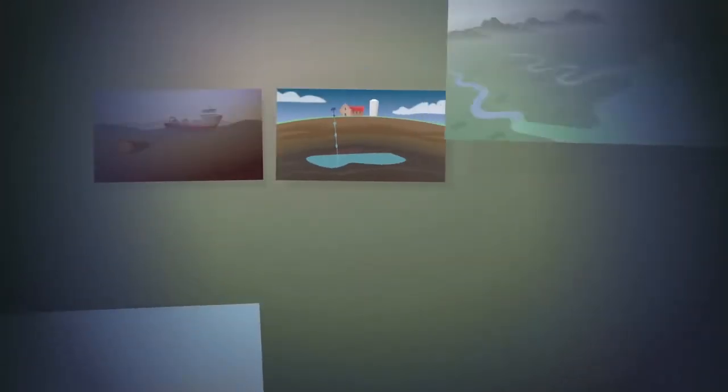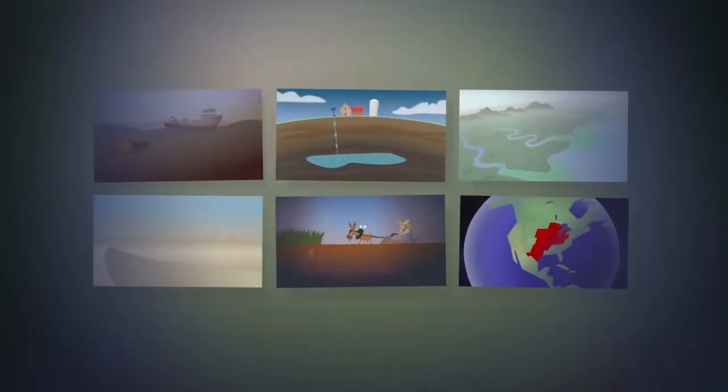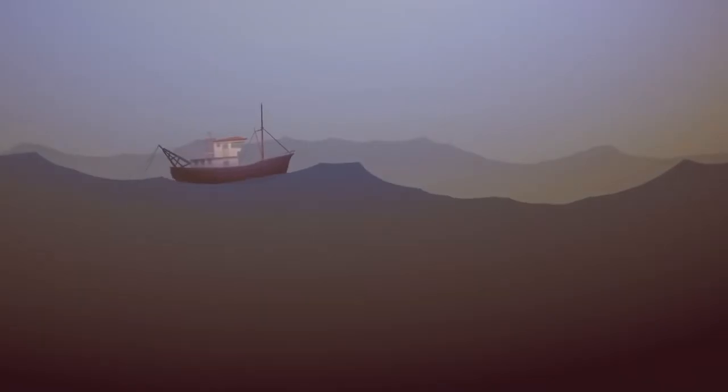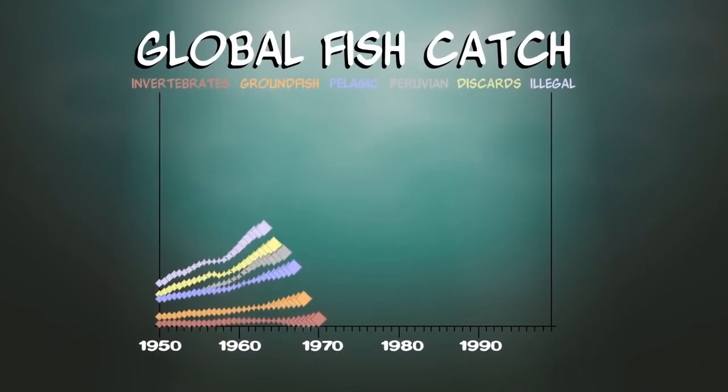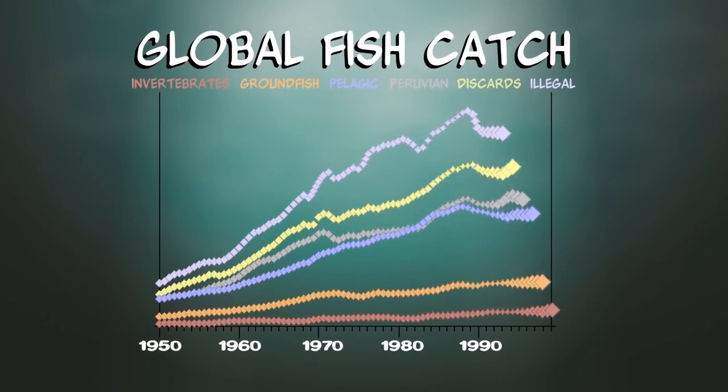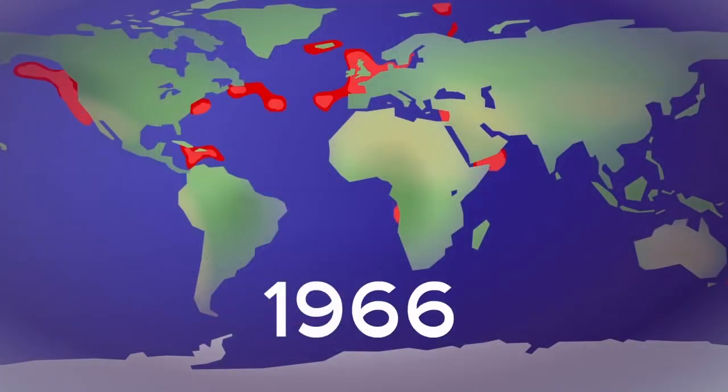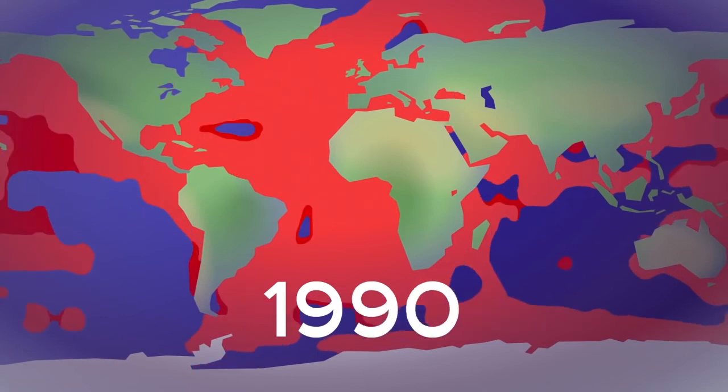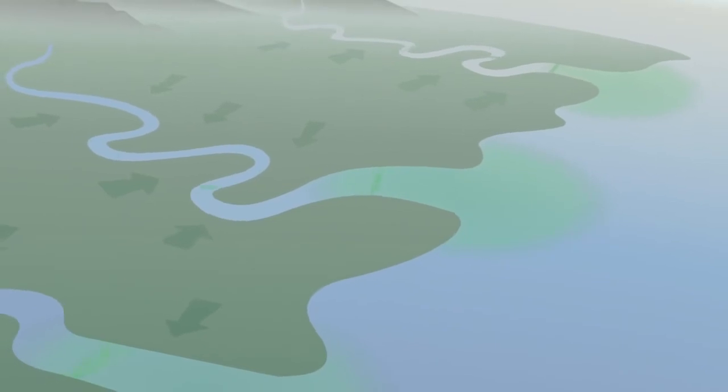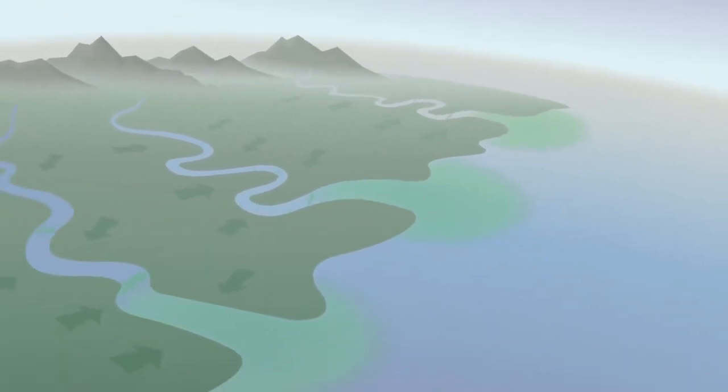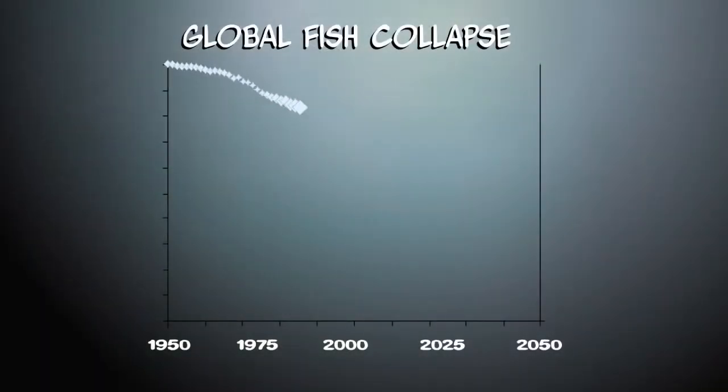Besides fossil fuel decline, there are several threats to the current system of food production. Cheap energy, improved technology, and subsidies have allowed massive fish catches. Global fish catches peaked in the late 1980s, forcing fishermen to move into deep waters. Nitrogen runoff by fossil fuel-based fertilizers poisons rivers and seas, creating enormous dead zones. At this rate, all fish populations are projected to collapse by 2048.